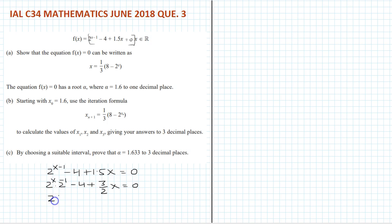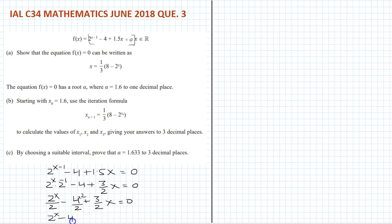So this becomes 2 to the power x over 2, minus 4, plus 3 over 2 times x equals 0. Now take 2 as the common denominator everywhere. So this gives 2 to the power x minus 4, plus 3x equals 0.